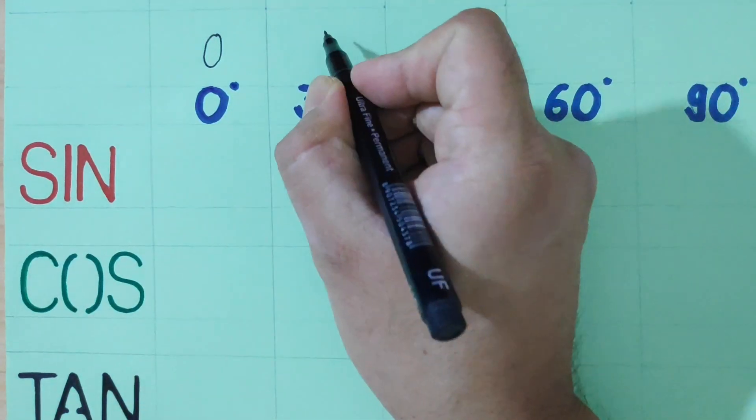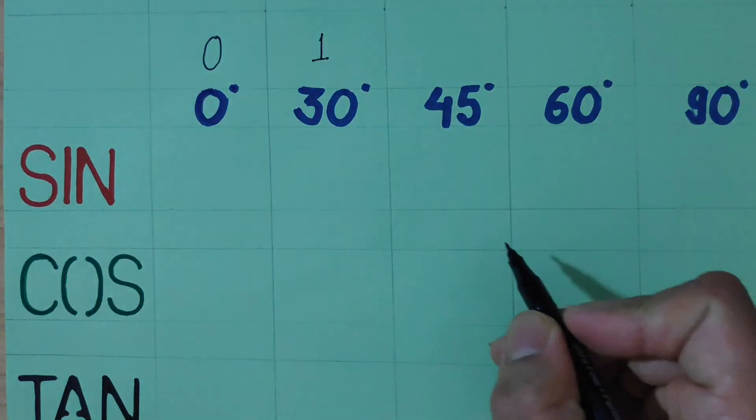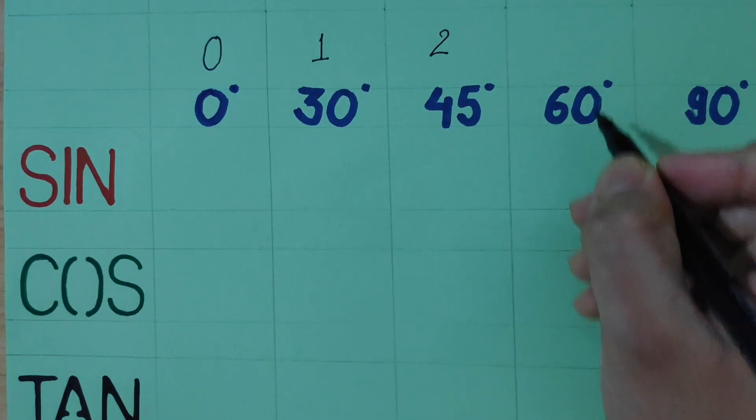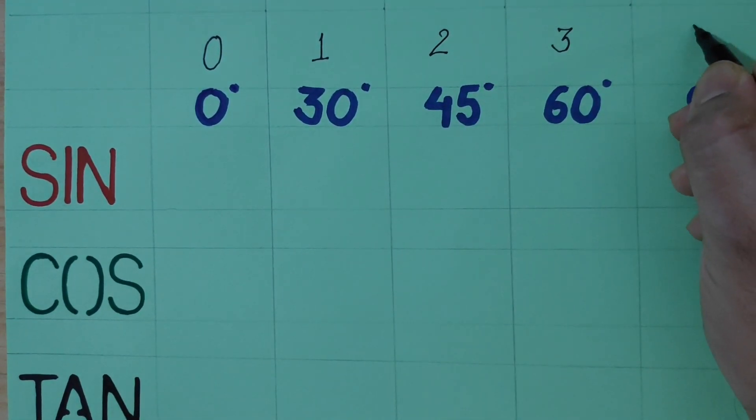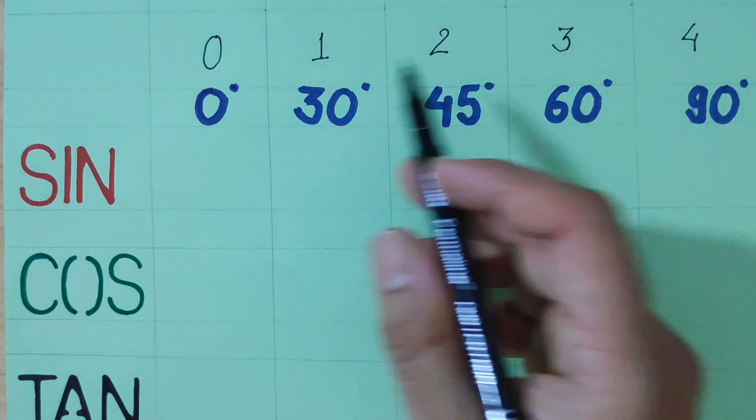30 is 1, 45 is 2, 60 is 3, 90 is 4. So we will have 0, 1, 2, 3, 4.